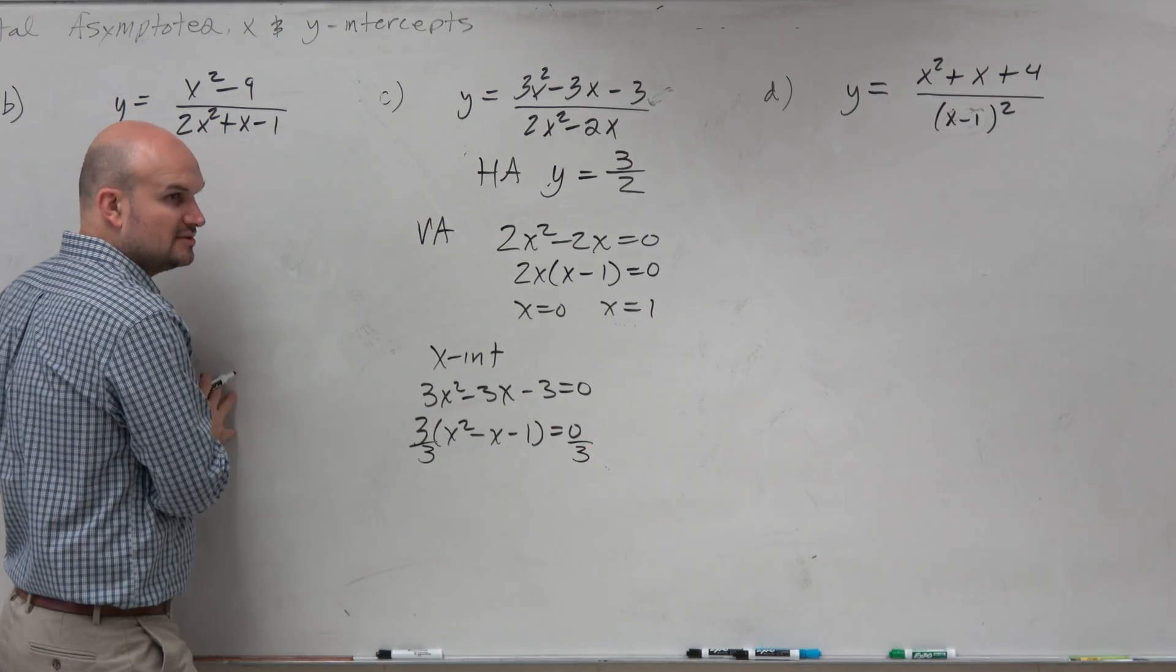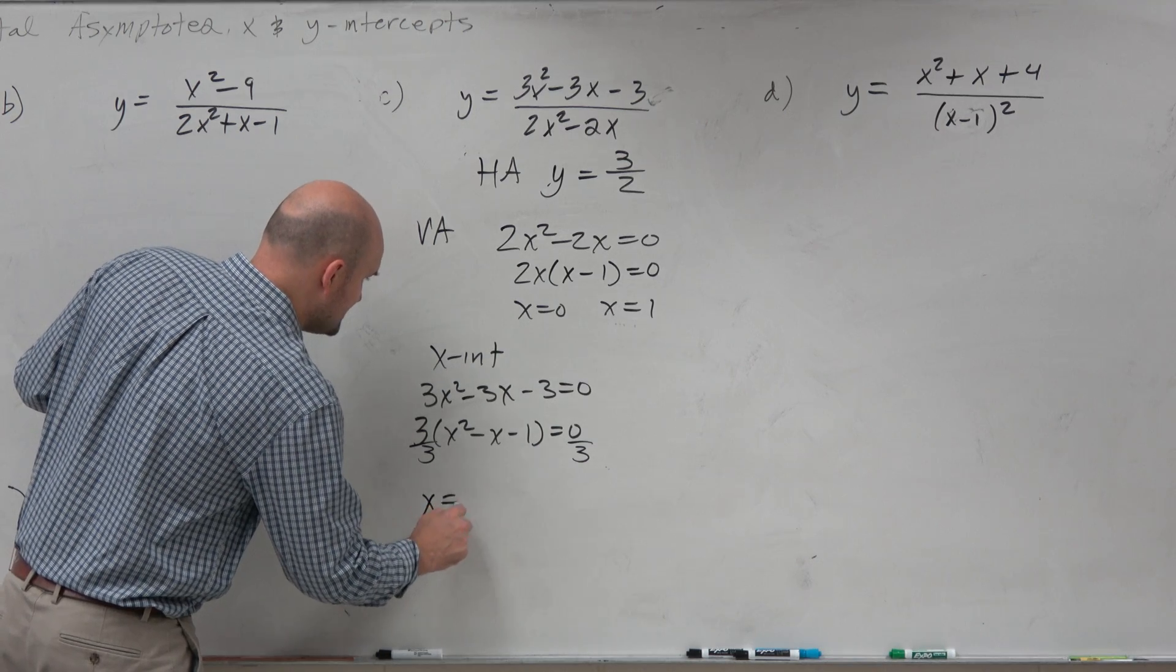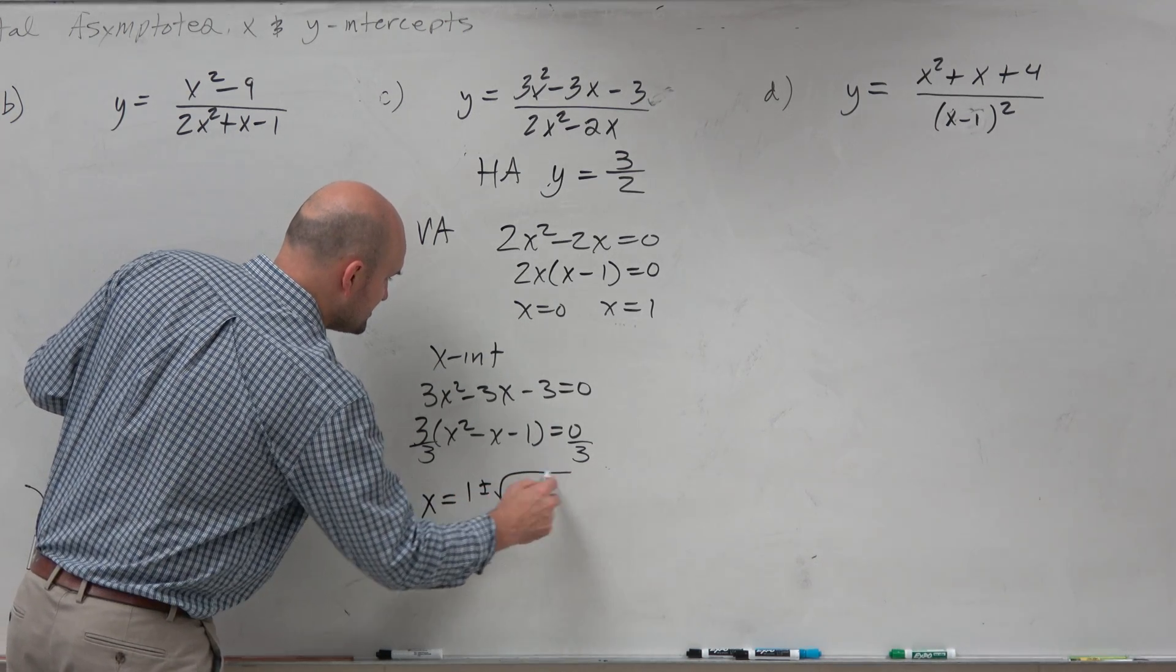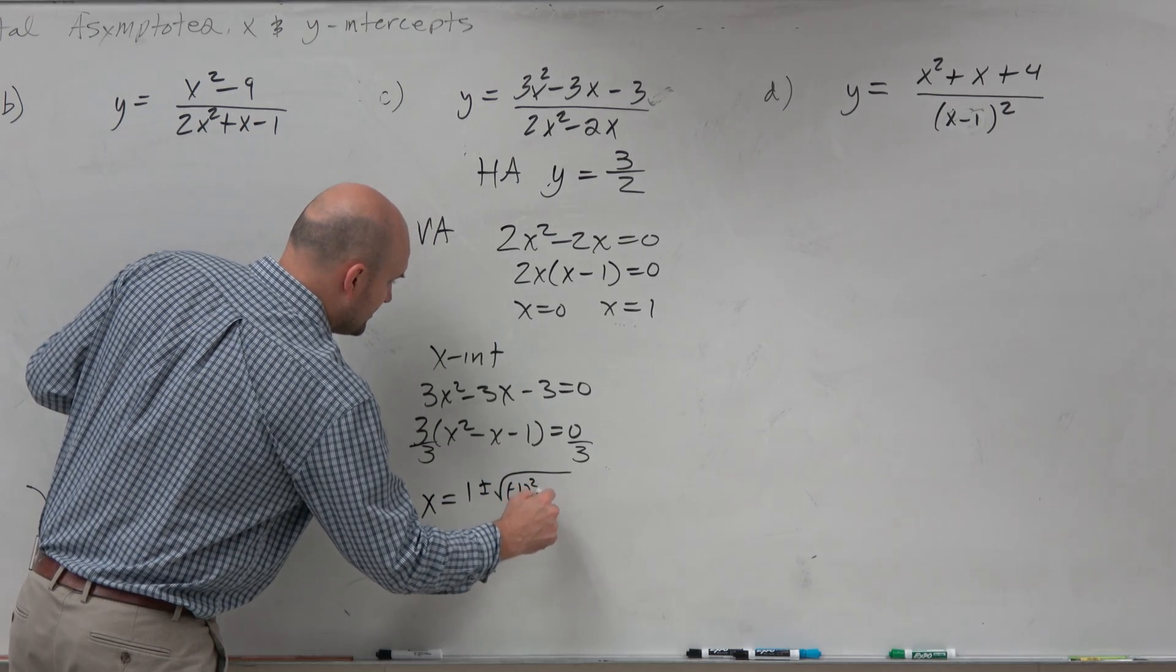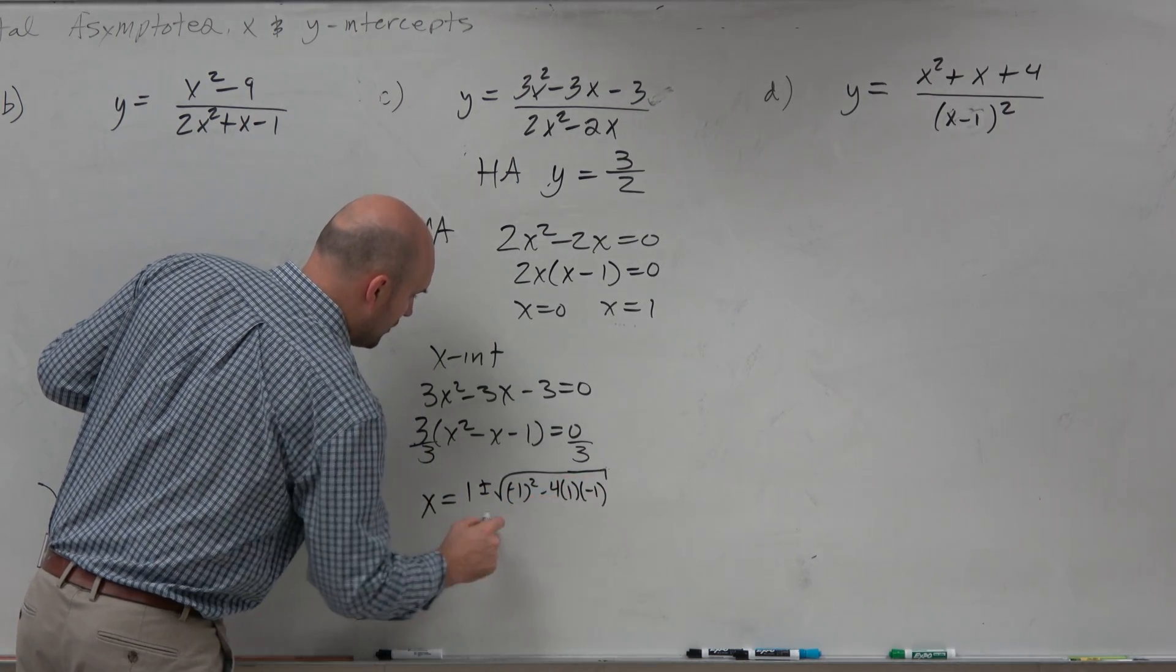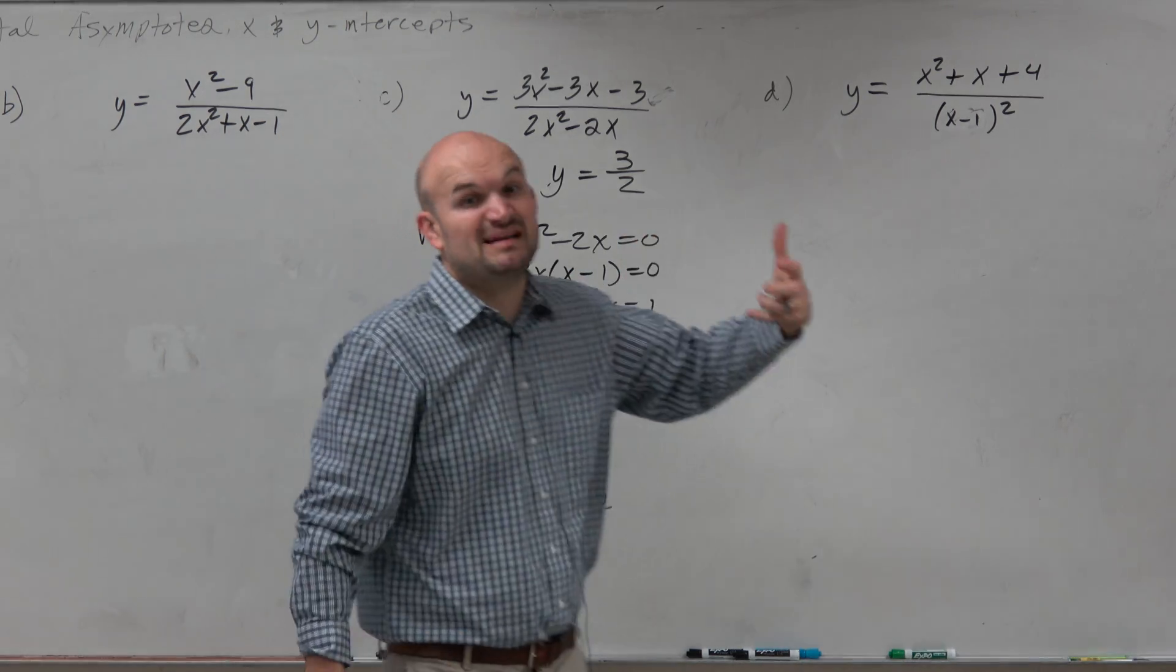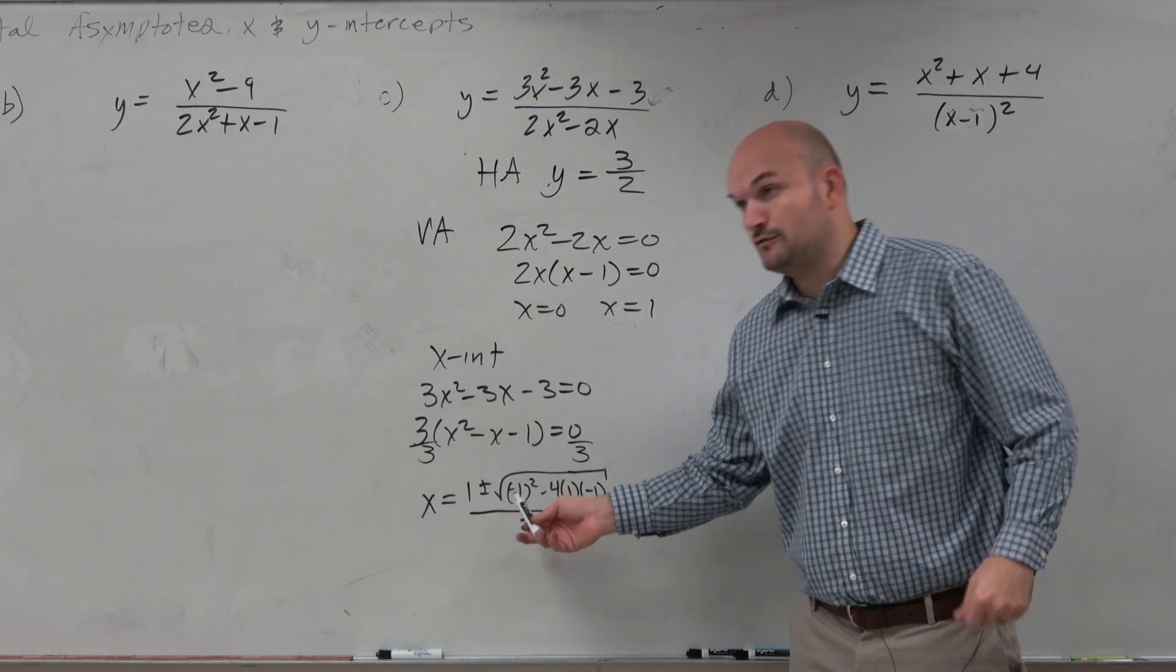OK? Get rid of it. It's just a scalar. It's not going to affect the zeros. So the quadratic formula: x is equal to opposite of b plus or minus square root of b squared minus 4 times a times c. Now hopefully at this stage in the game, you can do a little mental math. Negative 1 squared is 1.